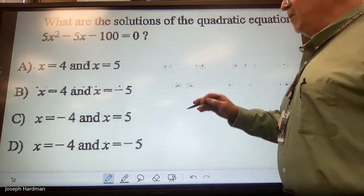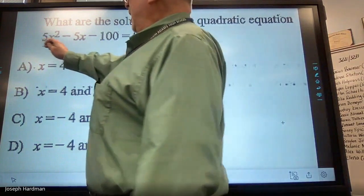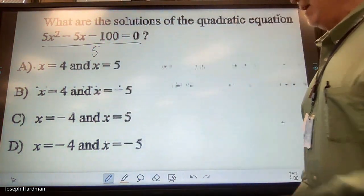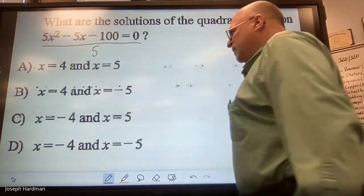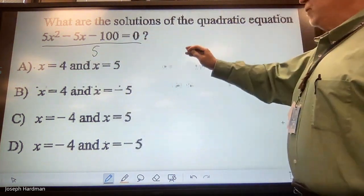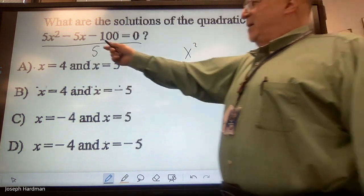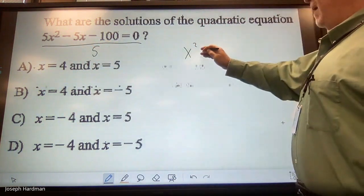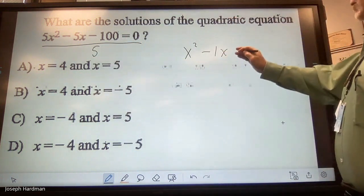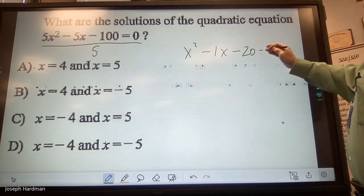So the first thing I'm going to do is take this equation right here and divide everything by 5. That means I'm going to take 5 into each one of those. Now instead of showing the work here, 5 over 5 is 1, so I got 1x². 5 over 5 is 1, so minus 1x. 100 divided by 5 is 20, so I got minus 20 and that equals 0.